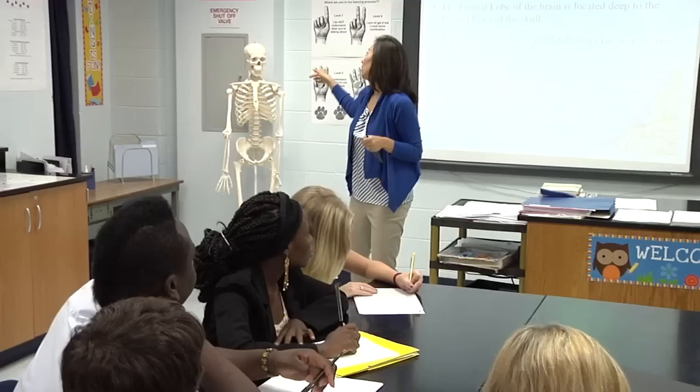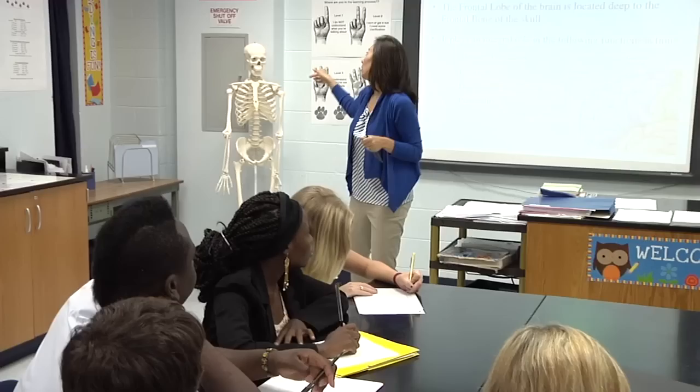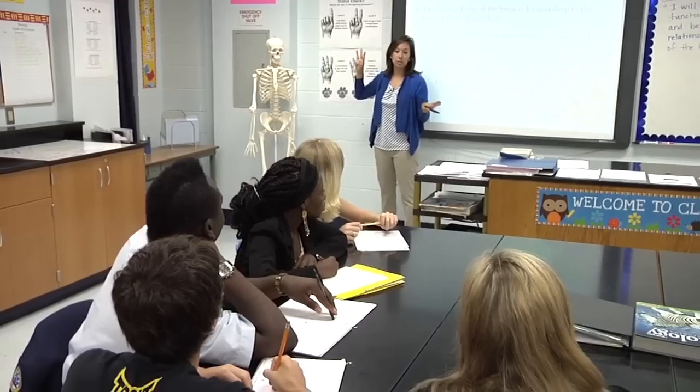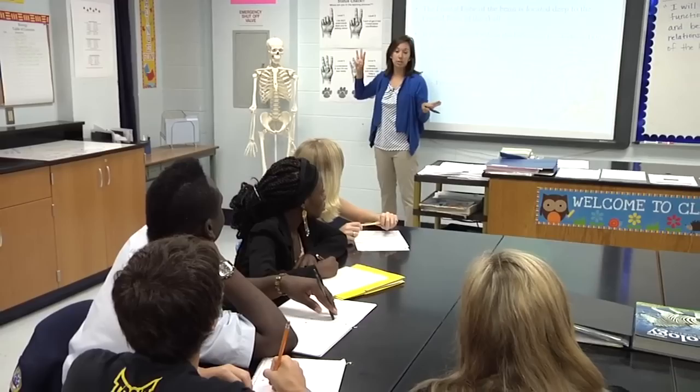Okay, and personality is also a major function of the frontal lobe. So what is your personal understanding? How are we doing so far? Let's go ahead and do a status check. If you're a level one, you do not understand what I'm talking about. If you're a two, you sort of get it but you need some clarification. A three is I understand but I'm not really ready for a test yet. And a level four is I'm ready for a test and I can help somebody out. How are we doing? Go ahead and show me.